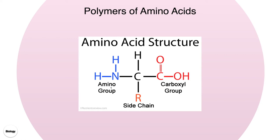We have our first reactive group, the amino group — we can remember it because the word amino has an N in it, standing for nitrogen, and there's also a hydrogen. Then we have our second reactive group called the carboxyl group, which is the same carboxyl group we saw on the fatty acid tails of lipids. It has a carbon double bonded to an oxygen, and that carbon also bonded to an OH group.